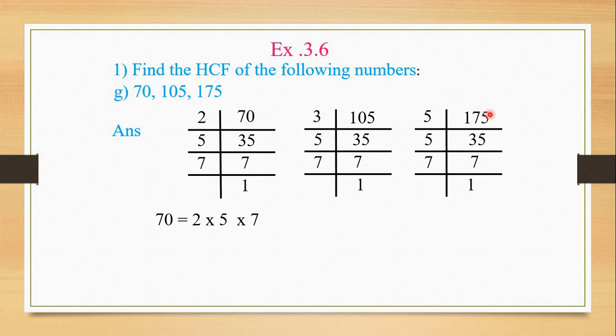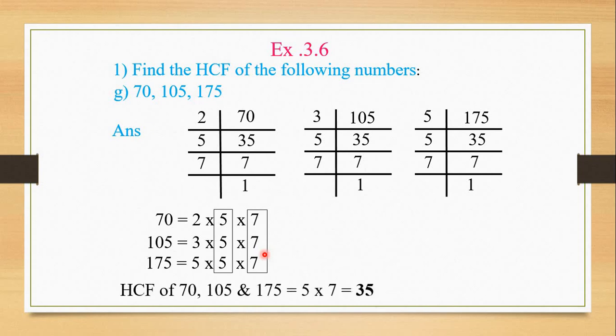After these steps, one by one, 70, 105, and 175, we will list all these prime factors. For 70: 2 × 5 × 7. For 105: 3 × 5 × 7. For 175: 5 × 5 × 7. Now we have to find the highest common factor. The common numbers are 5 and 7, appearing one time in all three. So our highest common factor of 70, 105, and 175 comes from multiplying 5 and 7, which is 35.